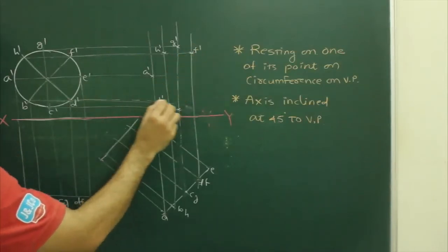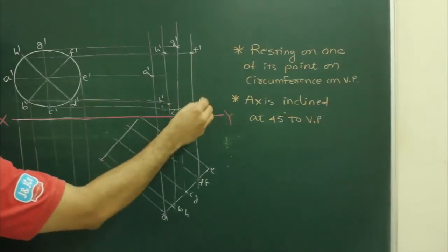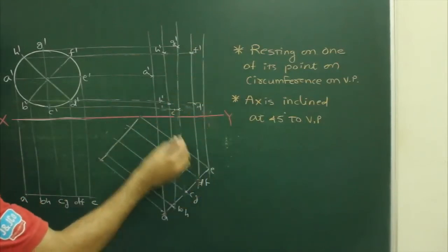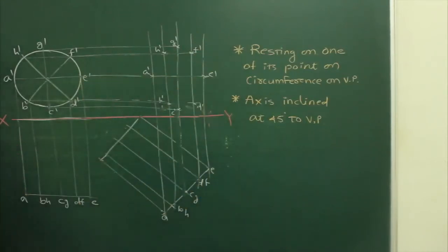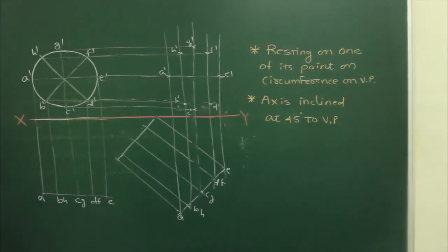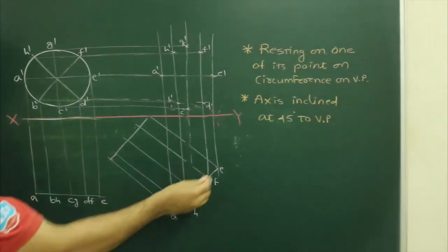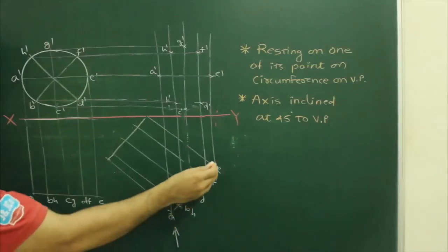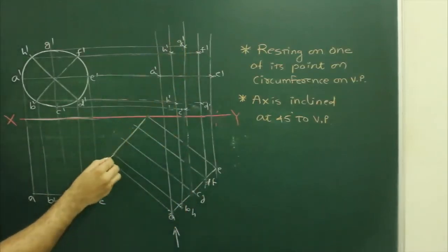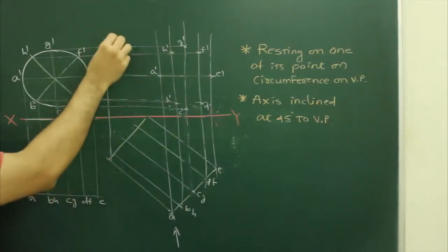E dash, D dash. So we got these side points. And also we will be able to see all these points. Same way we can project behind points as well.